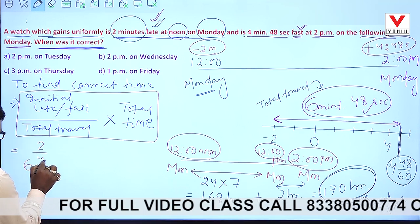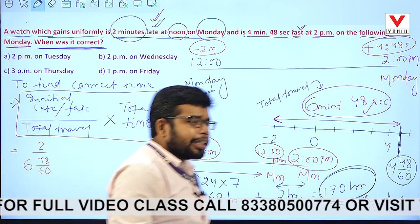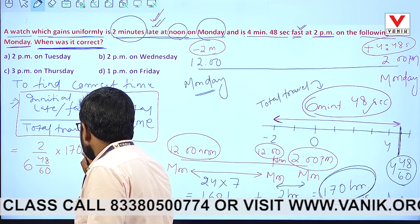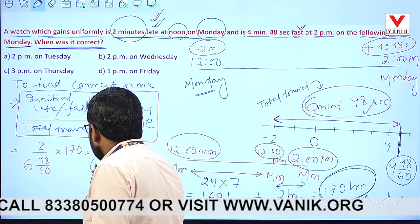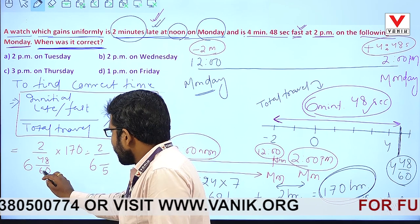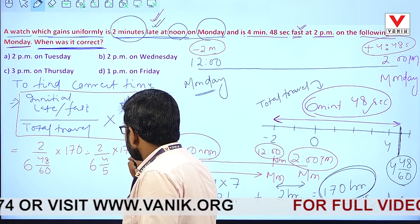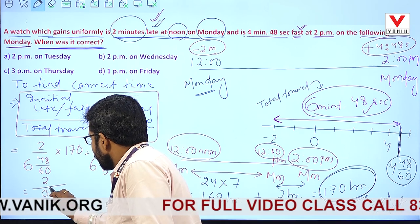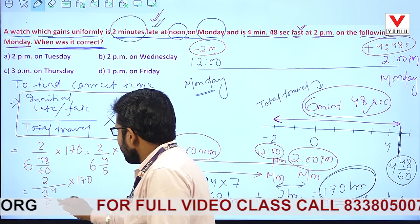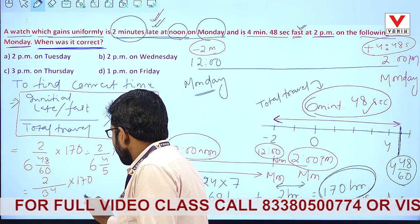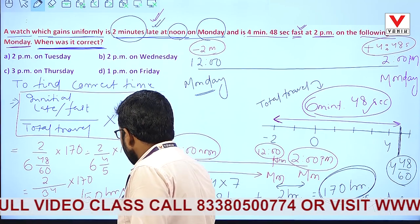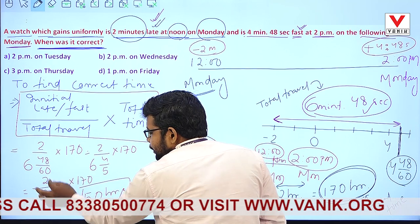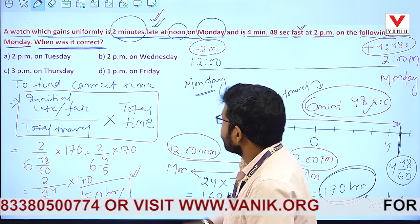So: initial late = 2 minutes = 2/60 hours. Total travel = 6 minutes 48 seconds = 6 and 48/60 minutes. Simplifying: 2 divided by (6 + 48/60), multiplied by 170. This simplifies to (2/1) ÷ (34/5) × 170, which gives us 50 hours.